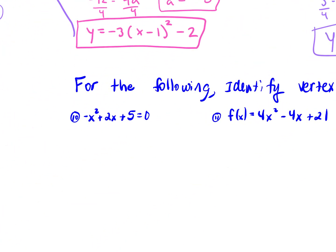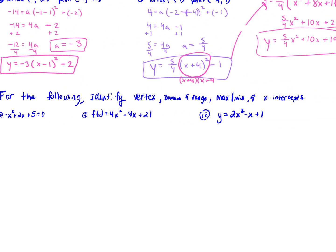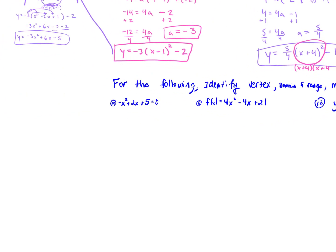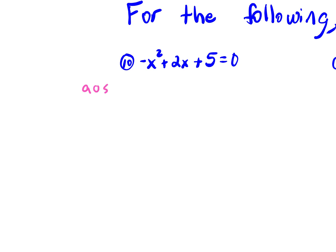Number 10. We need to identify the vertex, domain and range, max or min, and x-intercepts. We should also find the axis of symmetry to help with our vertex. Our axis of symmetry formula is negative b over 2a. Our b is negative 2: negative negative 2 over 2 times negative 1 gives negative 2 over negative 2, which is 1. So our axis of symmetry is x equals 1.